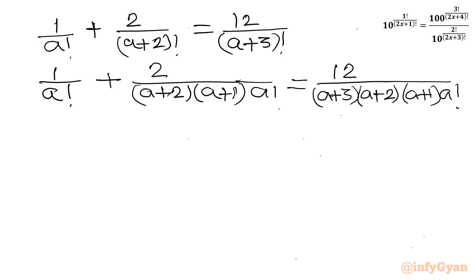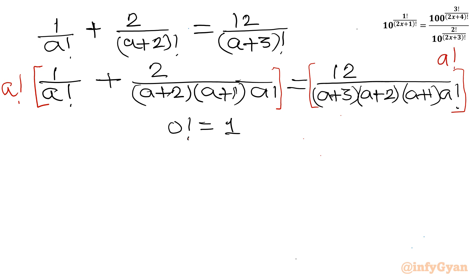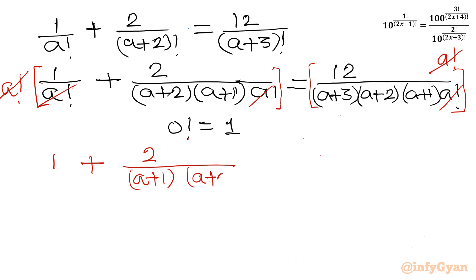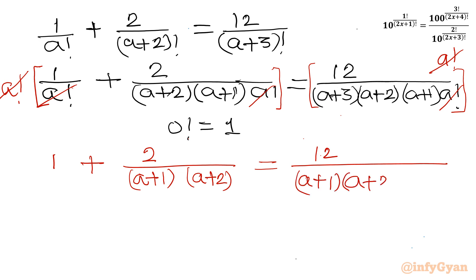Now, since 0! is also a non-zero value when a equals 0, we can multiply both sides by a factorial and cancel it from the denominator. This leaves us with: 1 plus 2 over [(a+1)(a+2)] equal to 12 over [(a+1)(a+2)(a+3)].